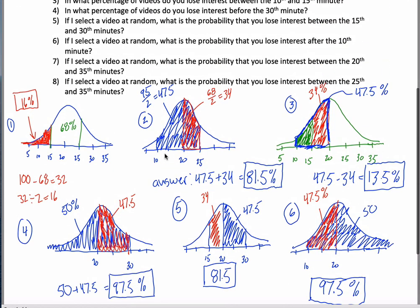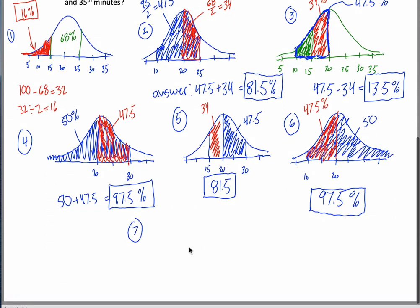Two more. We're almost there. Number seven. If I select a video, what's the probability that I lose or you lose interest between the 20th and 35th minutes? All right. I think that one won't be too bad. Because 20th is right in the middle. Works out kind of nice when you involve that in your question. 25, 30, 35. 20 to 35. Careful. This is not 50%. I think if I put this on a quiz, somebody would say it's 50%. You're like, you're almost right. But you're wrong. Because there's some people, at least under these assumptions, that lose interest after the 35th minute.